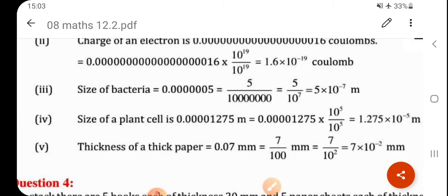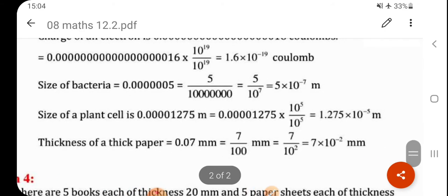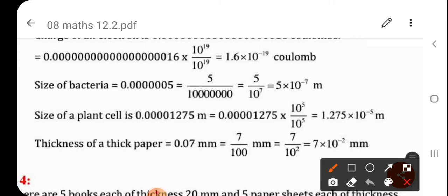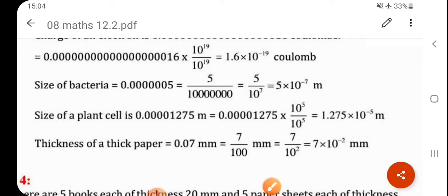Next, size of a plant cell, one number is given. So, here you are going to write 1.275. So, there will be a decimal point 1 after. So, count the number of places 1, 2, 3, 4 and 5. So, here you have to write 10 raised to minus 5 meter.